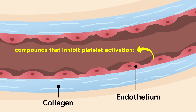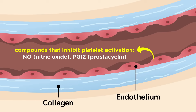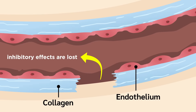Additionally, the intact endothelial layer releases small molecules that inhibit platelet activation, such as nitric oxide, or NO, and prostacyclin, or PGI2. When the endothelial layer is damaged, these small molecules can't mediate their platelet inhibitory effects as efficiently.